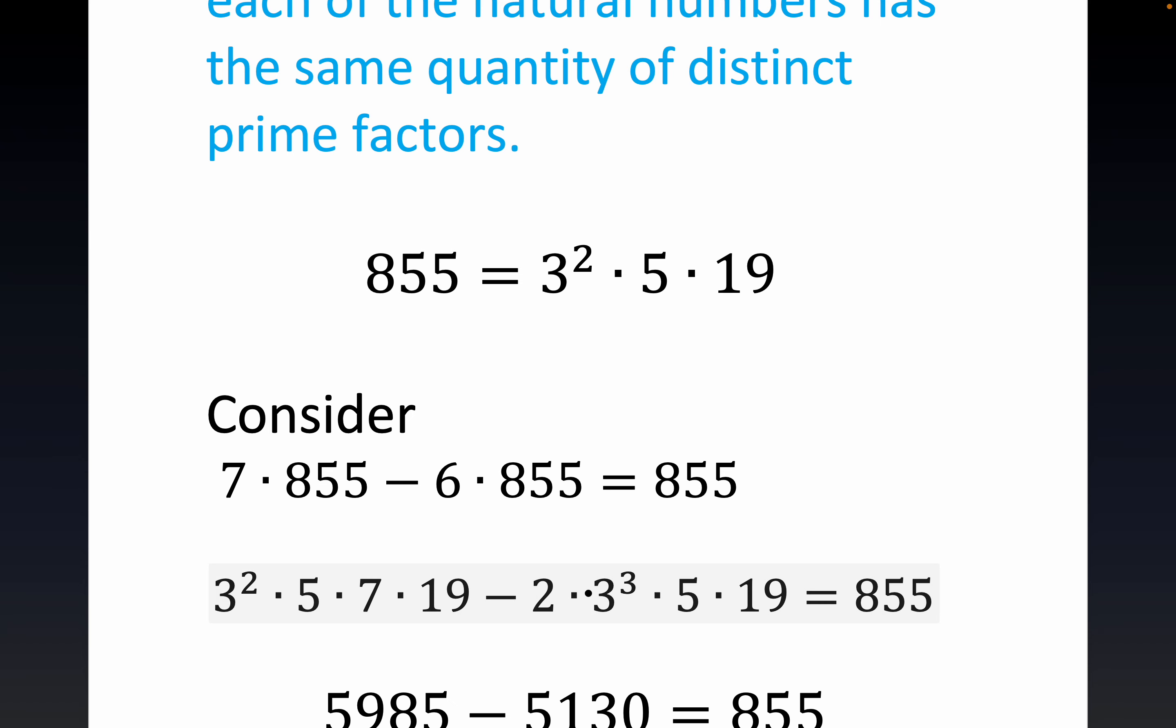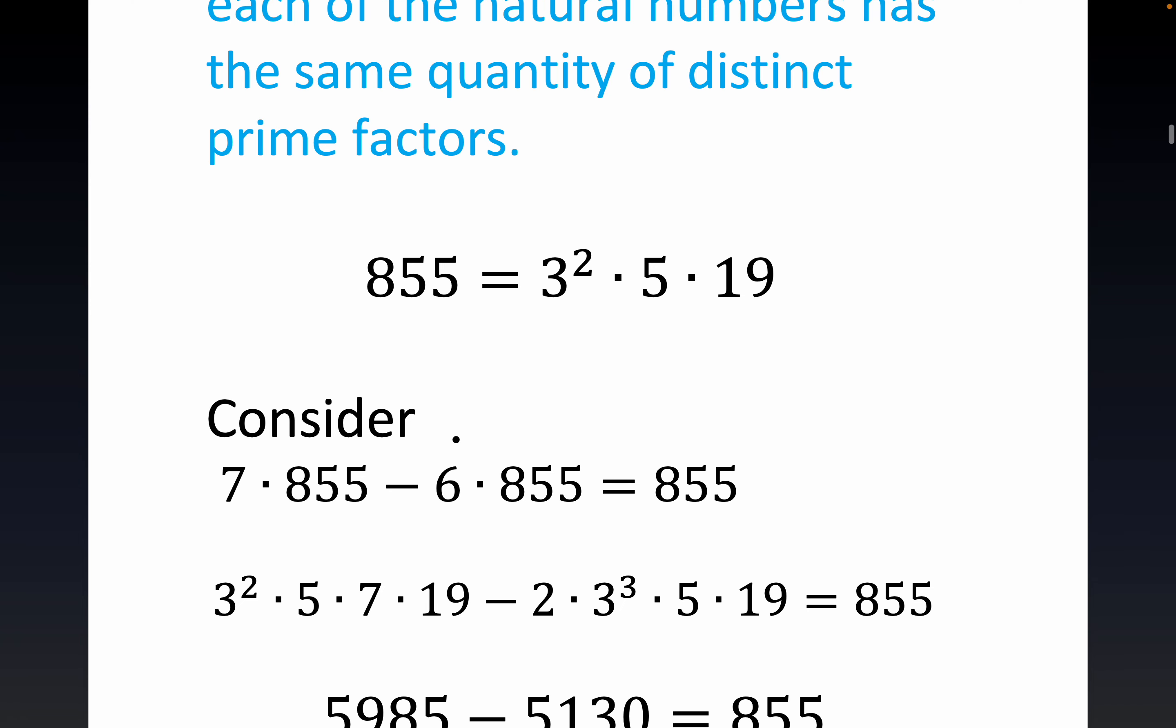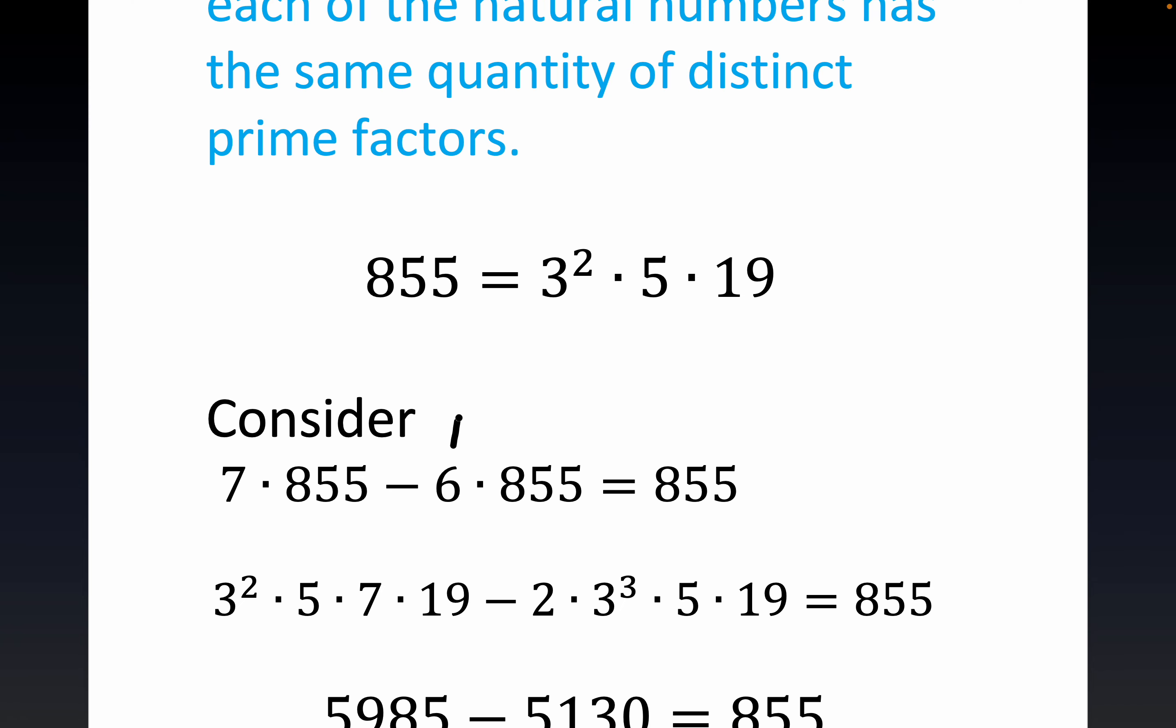Now if this is a little confusing, notice that 6 is equal to 2 times 3. And you can see where the 2 and the 3 cubed—this was just 3 squared. Now you have 2 and 3 cubed right here. But notice this is clearly equal to 855, which is what we're trying to do.